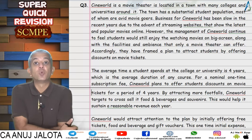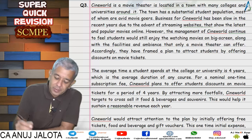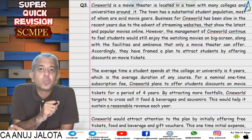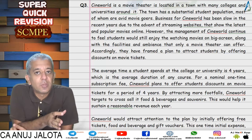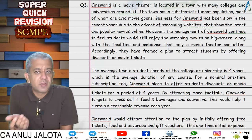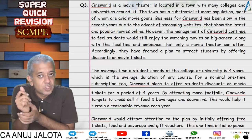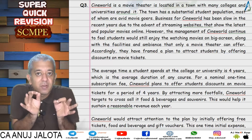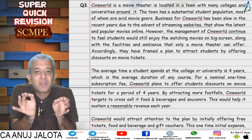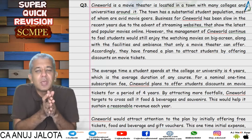Welcome back to our super quick revision series. We are on customer level profitability. Our third question was on customer life value — where a customer buys products from us at various points in time. We launched a product, he purchased it; we launched another product after two years, he purchased that. The question is: what is the present value of the total money that customer has given or will give to us?